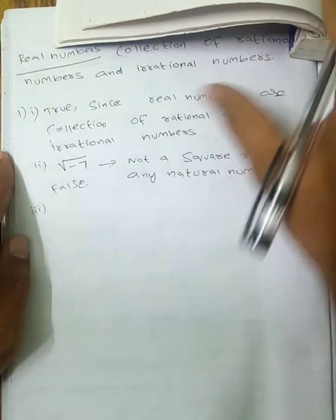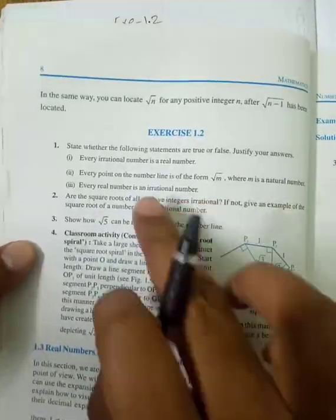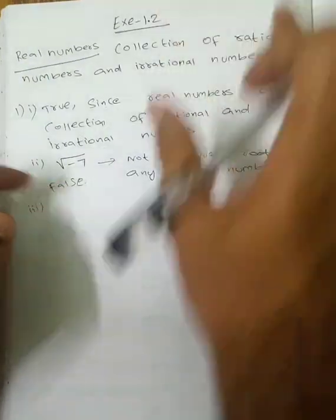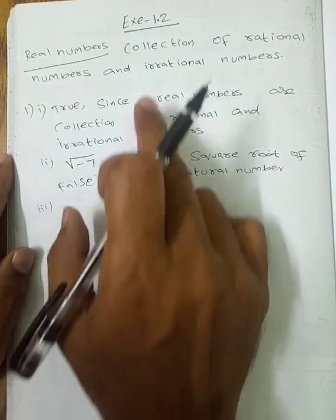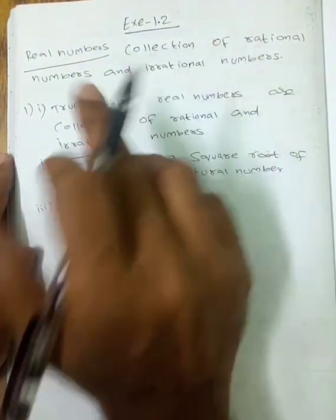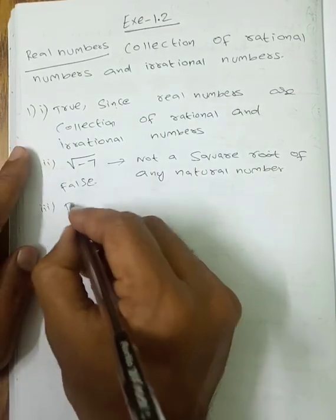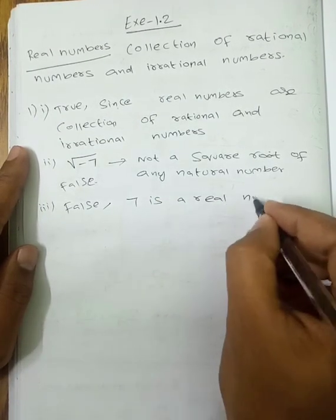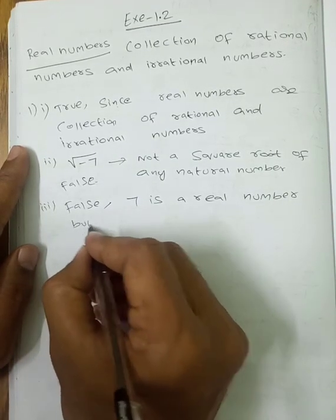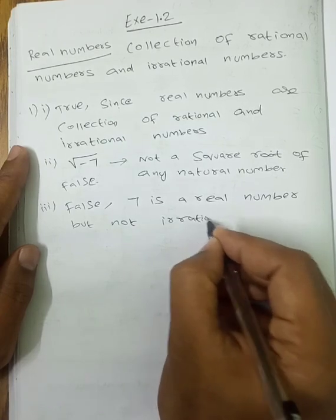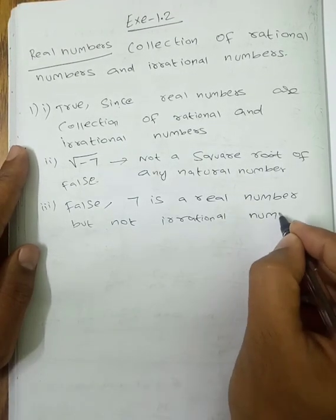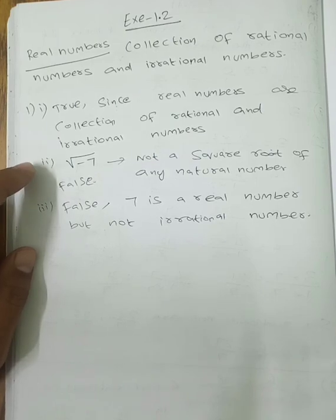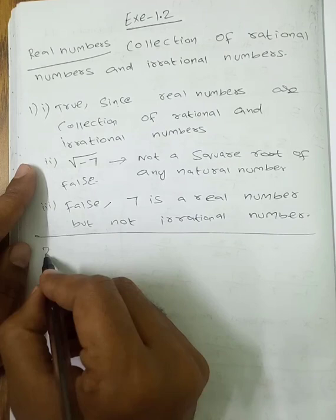Third: every real number is an irrational number. Since real numbers include both rational and irrational numbers, not all real numbers are irrational. The answer is False. For example, 7 is a real number but it is not an irrational number.